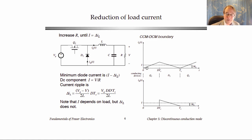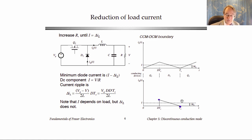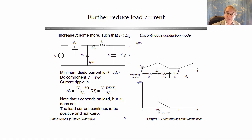Consider reducing capital I until it equals the ripple. Then the inductor current waveform shows the diode current starting at capital I plus delta I and ending at capital I minus delta I, which equals zero for this particular load current. If we increase the load resistance even more, the DC component capital I is now less than delta I. Even though the average current is positive, it's less than delta I, and so the diode current and inductor current go to zero before the end of the switching period.